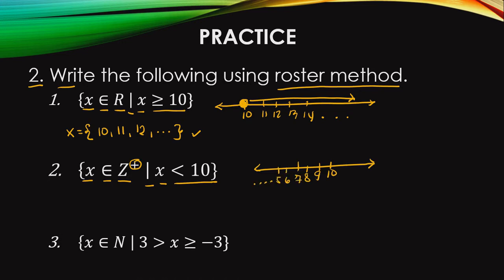There is no limitation going left. So is 10 included? No — 10 is not included because it is only less than. So we start at 9, going to the left — values smaller than 10.